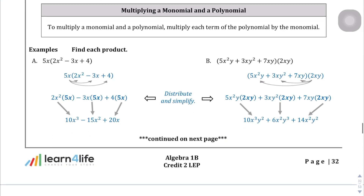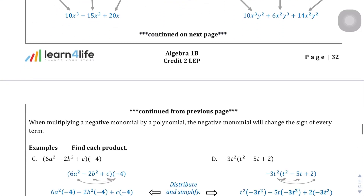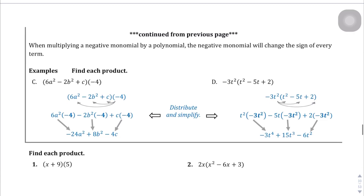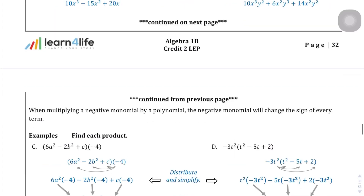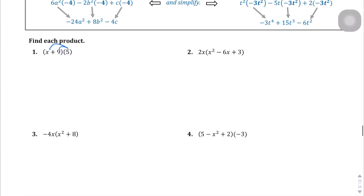Next page — we're going to multiply a polynomial by a monomial. Go ahead and read that explain section if you want. But it's very much like the distributive property. We're going to distribute that 5 to the 2 terms inside. So x times 5 is 5x, and 5 times 9 is 45.